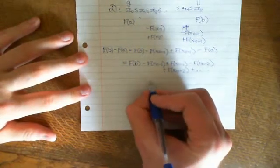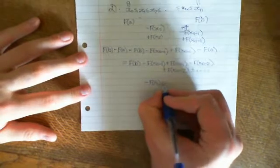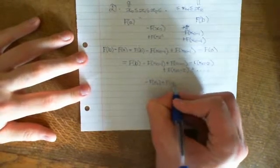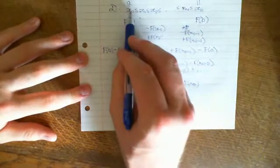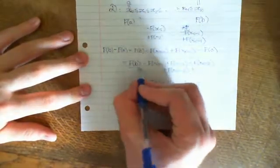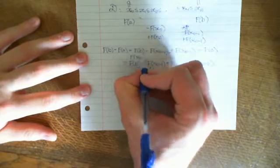We'll have minus F(x₁) plus F(x₁) minus what we could write as F(x₀) where we've called x₀ = A, and we could write F(B) over here as F(xₙ).